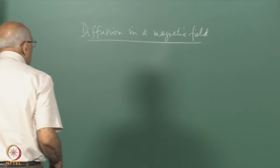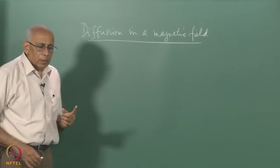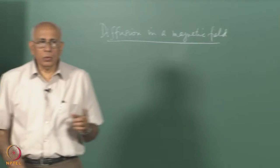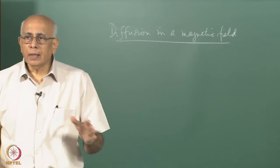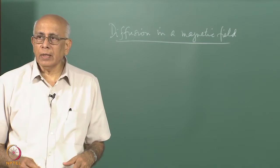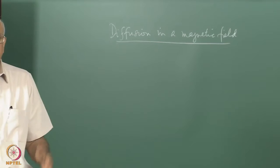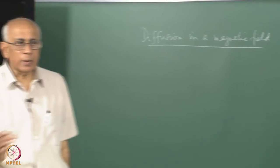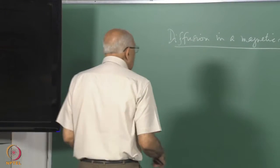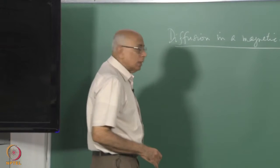It is a simple exercise because, as we know, the Lorentz force on the particle due to the magnetic field is linear in the velocity, and as soon as we have a linear problem the Langevin equation can be solved explicitly. So let us write it out step by step; we will look at the velocity distribution as well.